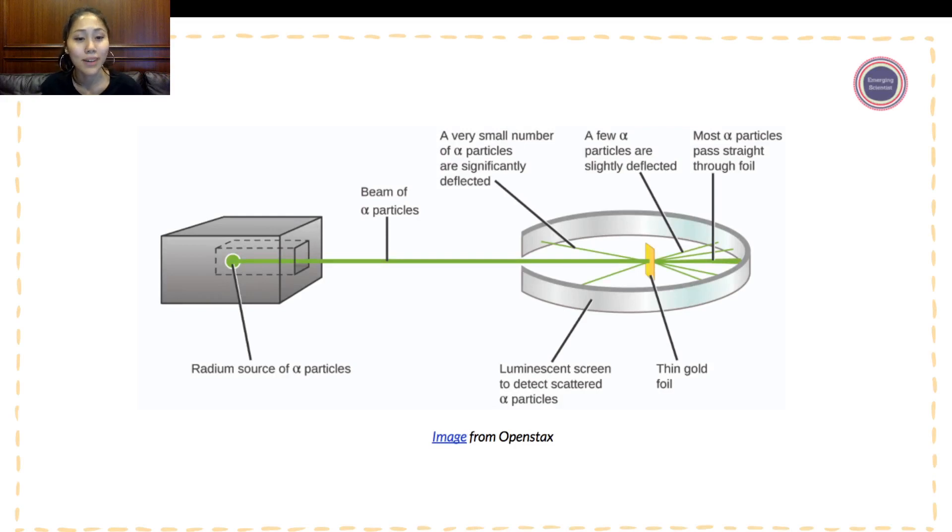This is an example of his gold foil experiment. And you see that there was a thin gold foil here. The experiment, we're not going to go into too much of a detail, but just that there were radium source of alpha particles that were essentially, he was thinking that this experiment was probably going to further support JJ Thompson's theory. But after he ran this experiment, he found that instead of completely just the rays kind of going through the foil, oddly, there were pieces of alpha particles that were deflected.